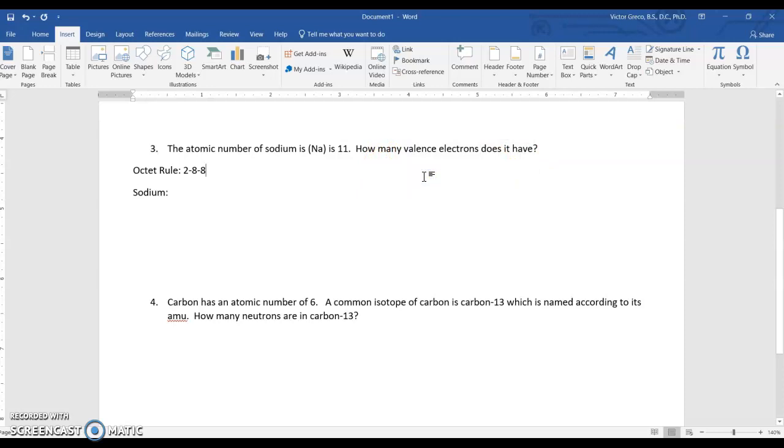Valence electrons are in the outer shell. Sometimes we call shells orbitals or energy levels. Use the octet rule. For example, the first shell wants 2 electrons, the second wants 8, then 8, and if we kept going there'd be more 8's.